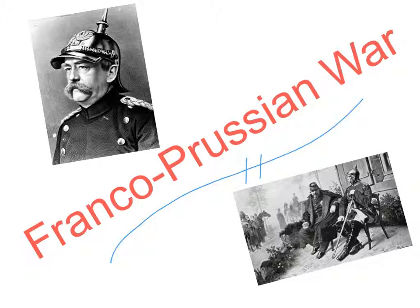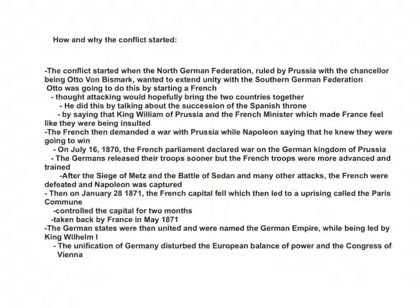The Franco-Prussian War. How and why the conflict started. The conflict started when the North German Federation, ruled by Prussia, with the Chancellor being Otto von Bismarck, wanted to extend unity with the Southern German Federation. Otto was going to do this by starting a French dispute.